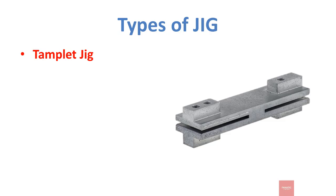Template jig is when the workpiece is placed between the jig plate and the base plate for locating the drill's location. It is the simplest form of jig technique. It cannot be used for mass production because when the tool is inserted and removed repeatedly in the holes, due to wear and tear, the holes enlarge which affects the accuracy of the machining. Therefore, we cannot use these jigs for large or mass production.